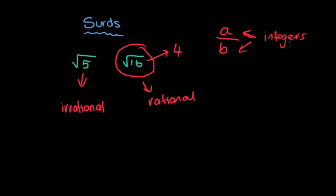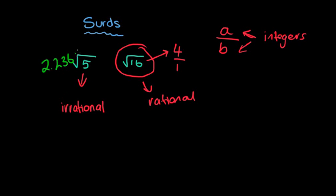For example, the square root of 16 equals 4, which can be written as 4 over 1. But if you grab your calculator and type in the square root of 5, it won't come out to be a whole number — it comes out to be something like 2.236, and it keeps on going, so it's not a nice fraction like 4 over 1.